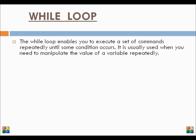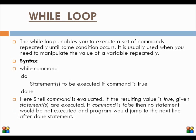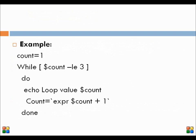First the condition is evaluated and then the statements in the body are executed. First the command is evaluated, and after that the statements which follow are executed. If the command fails, then we come out of the while loop. In this example, count is initialized to 1. While the value of count is less than or equal to 3, the value of count is displayed and count is incremented. The output is 1, 2, and 3. When the value of count becomes 4, the condition fails and we come out of the while loop.